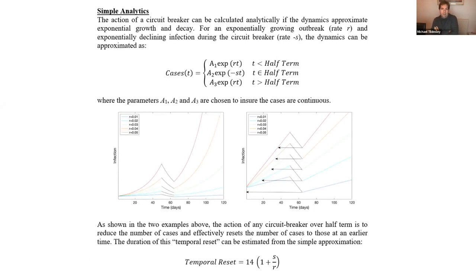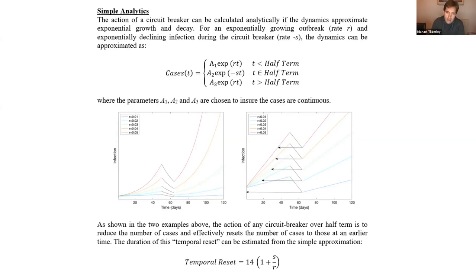There's very simple mathematics underlying the circuit breaker idea. When disease is prevalent you have exponential growth. If you implement a circuit breaker around the school half-term period, and drive R below one, you enter an exponential decay phase. But as soon as you end the circuit breaker, R becomes greater than one again and growth resumes. The time bought depends on how fast the epidemic was growing before the circuit breaker and how much it decays during it.